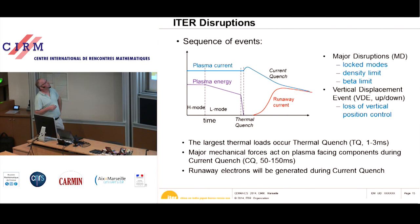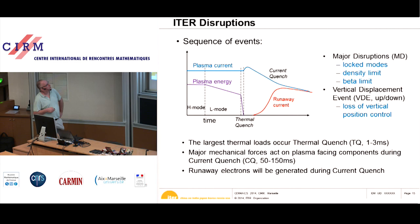The temperature goes down very quickly, which means plasma resistivity becomes very large. A large electric field is created in this phase, and this large electric field can drive fast electrons — which is called a runaway current. These are very dangerous for ITER.